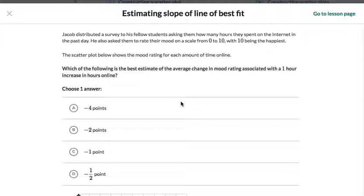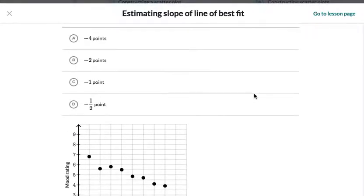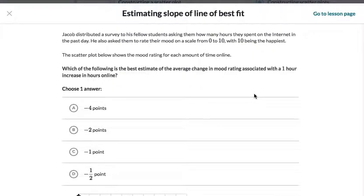Now if we read these, we can certainly read the question that goes along with this. Generally the data gives you enough to go by, but let's go through and read the question. So Jacob distributed a survey to his fellow students asking them how many hours they spent on the internet in the past day. He also asked them to rate their mood on a scale from 0 to 10, with 10 being the happiest.